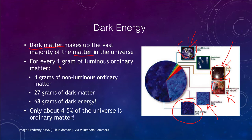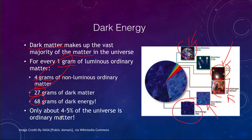As a comparison: if we imagine one gram of luminous ordinary matter — the ordinary stuff we see every day — for every one gram of that, there would be four grams of non-luminous ordinary matter, such as hydrogen gas that is not glowing. But for those five grams of ordinary matter, there would be 27 grams of dark matter and 68 grams of dark energy. In reality, only about 4 to 5% of the universe is the ordinary matter that makes up everything here on Earth, all the stars, nebulae, galaxies, and everything we've studied in astronomy. The rest is in dark matter and dark energy.